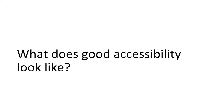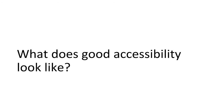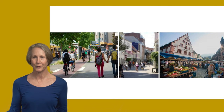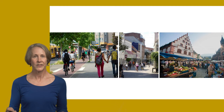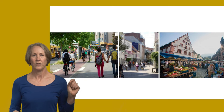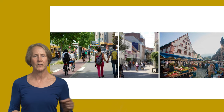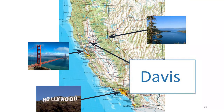So what does good accessibility look like? How do we achieve that? Well, if you've been to Europe you know what it looks like because they do this very well. But there are examples in the US where you can find good accessibility, and I'm lucky enough to live in one of those cities — Davis, California.